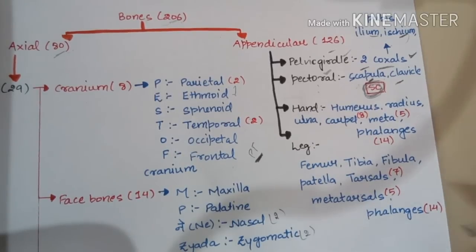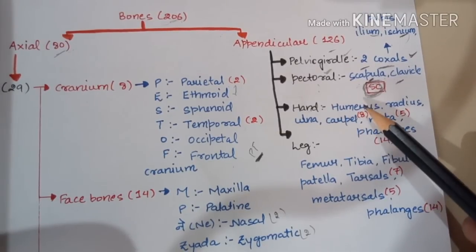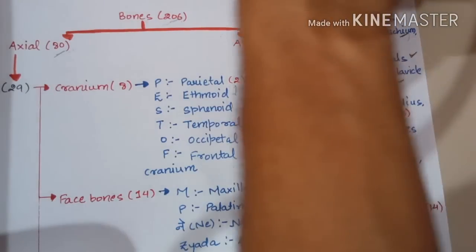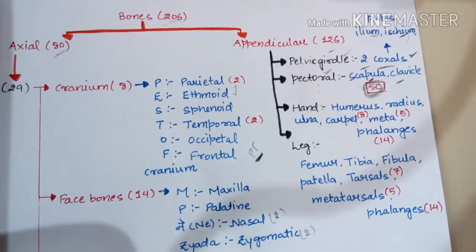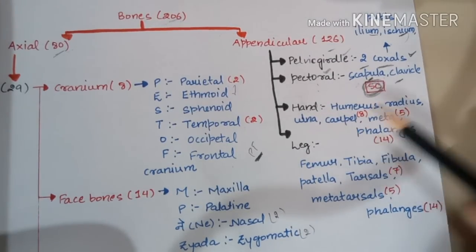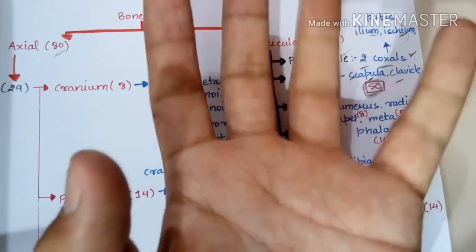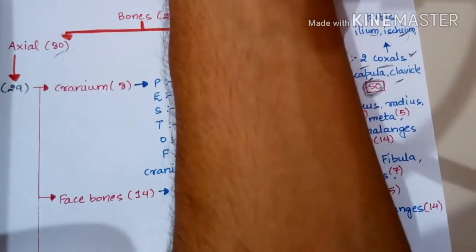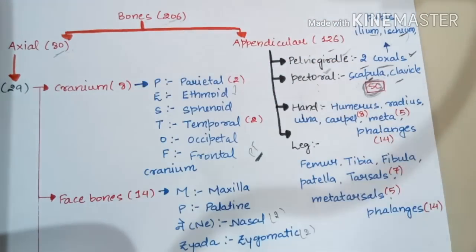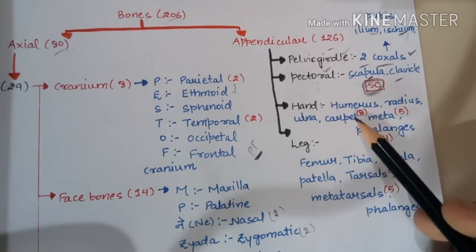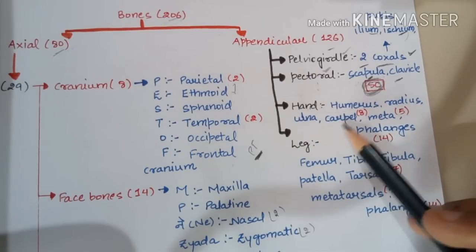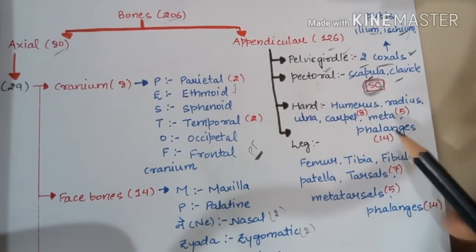Now for the hand bones: below the shoulder is the Humerus — remember it from 'humor.' Then come Radius and Ulna in the forearm. Then Carpals at the wrist — 8 in number. Then Metacarpals at the palm — 5 in number. Then Phalanges in the fingers — 14 in number. So Humerus (1), Radius (1), Ulna (1), Carpals (8), Metacarpals (5), Phalanges (14) = 30 bones total in one hand.